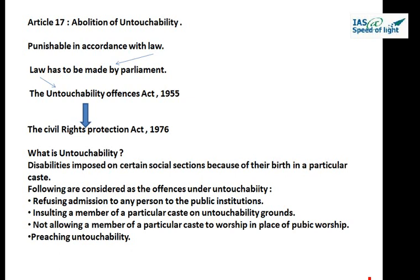Let us read Article 17 from PM Bakshi, page number 39. It talks about the abolition of untouchability. It says untouchability is abolished and its practice in any form is forbidden. The enforcement of any disabilities arising out of untouchability shall be an offense punishable in accordance with law. Parliament has made the Untouchability Offenses Act 1955, which was revamped in 1976 as the Civil Rights Protection Act.